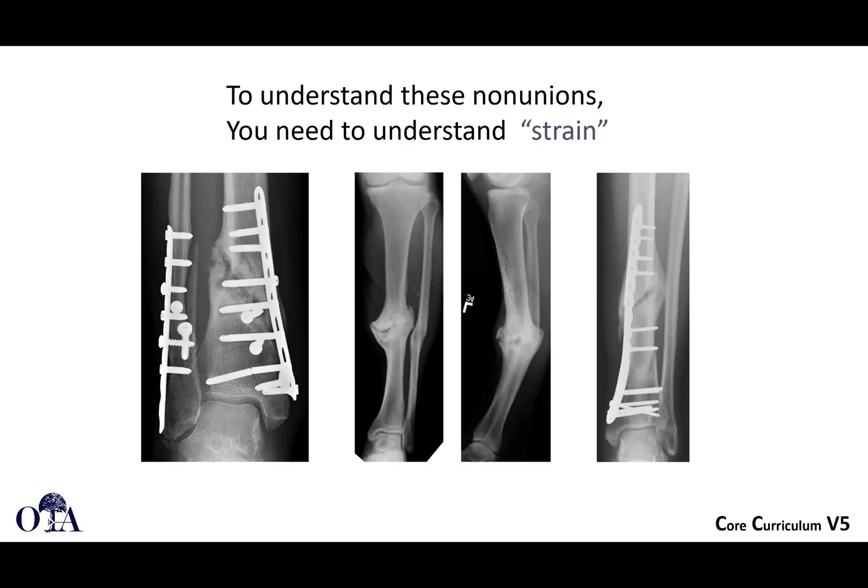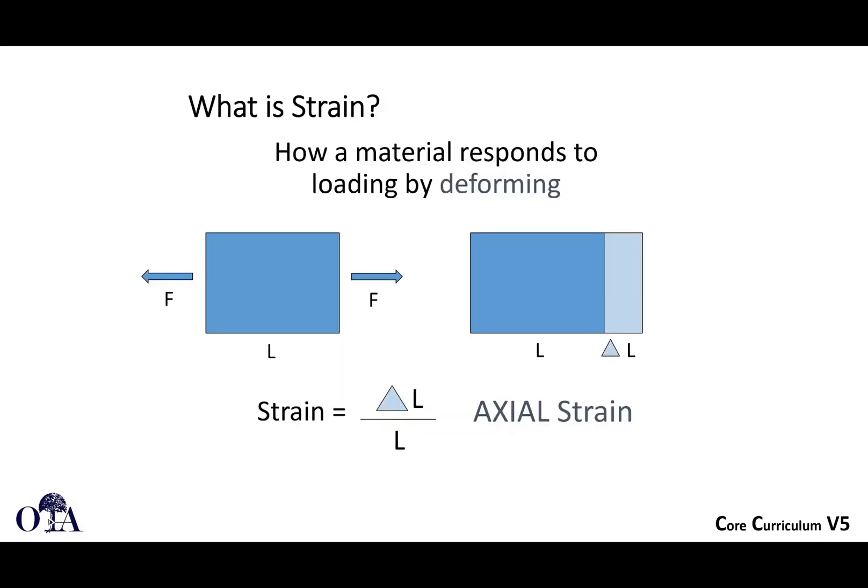To understand non-unions, let's talk about strain. Here are some examples of tibia non-unions. Strain is how a material responds to loading by deforming. If you have a material of a fixed length and then you increase it, strain is defined as delta L — the change in length — over the original length. That is axial strain.